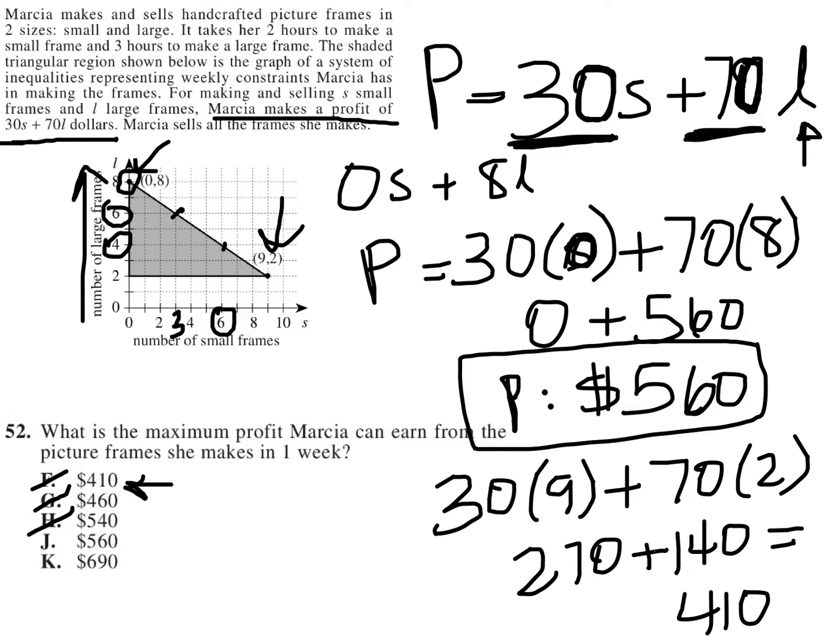If you want to try those, you can. You put in 6 for S and 4 for L, and we don't get a number bigger than 560. If you put in 3 for S and 6 for L, you would also not get a number larger than 560.